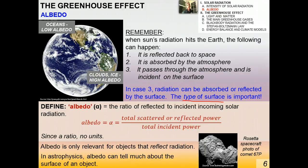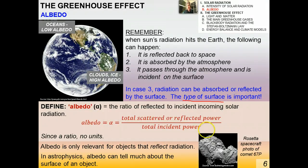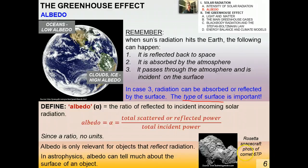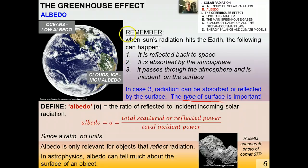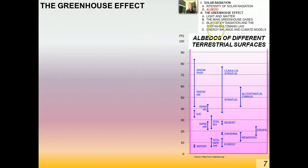Albedo is only relevant for objects that reflect radiation. In astrophysics, the albedo of extraterrestrial objects can tell us a lot about their surface composition. For example, the Rosetta spacecraft landed on Comet 67P in 2014, confirming comets are made mostly of ice and are very shiny. By observing the albedo of distant planets and other bodies, we can infer what their surfaces are like.